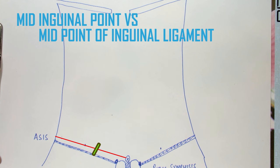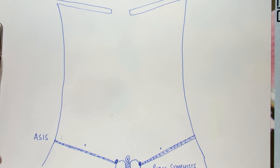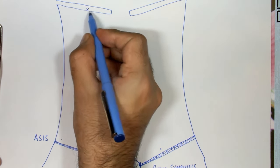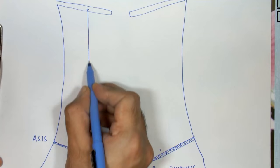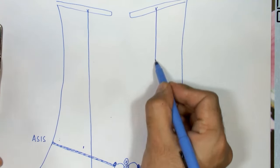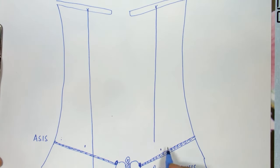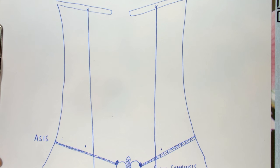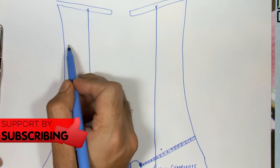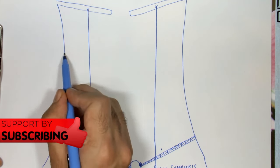To divide the abdomen into various regions we take four lines. Two of them are vertical — above, these lines pass through the mid clavicular point, and below they pass through the mid inguinal point, not the midpoint of the inguinal ligament. There are also two horizontal lines used in dividing the abdomen into various regions.